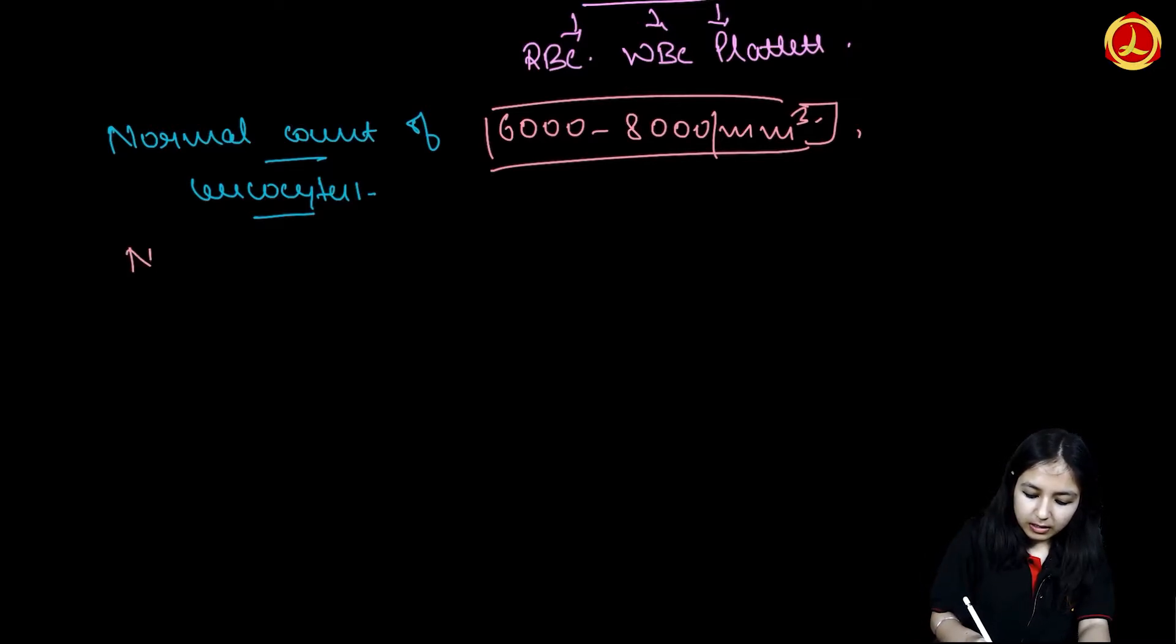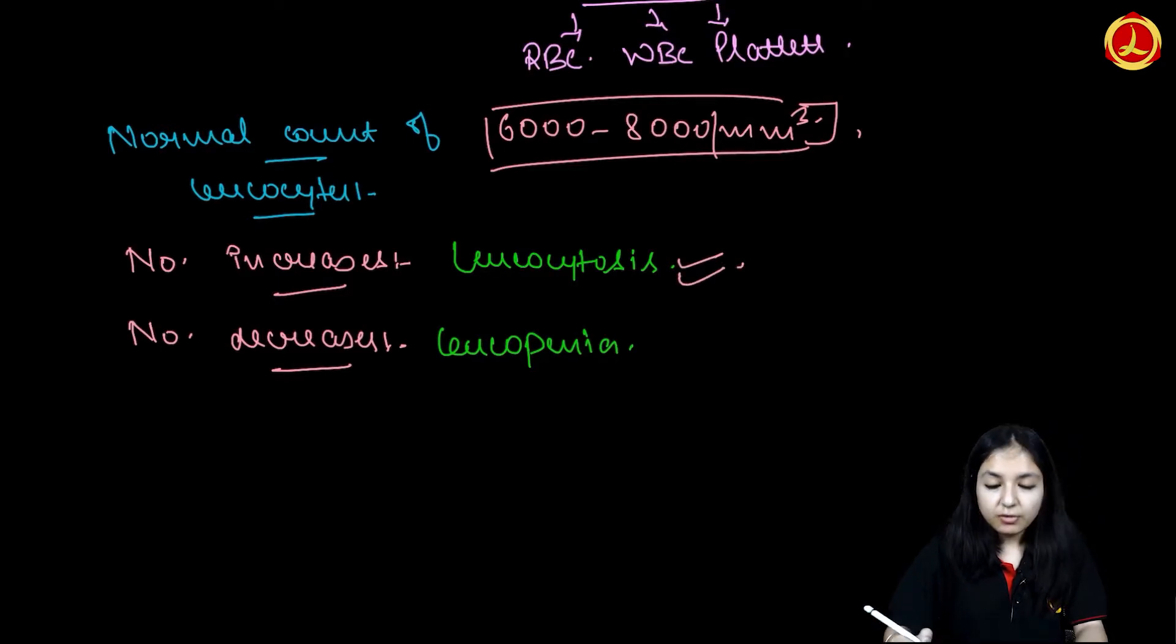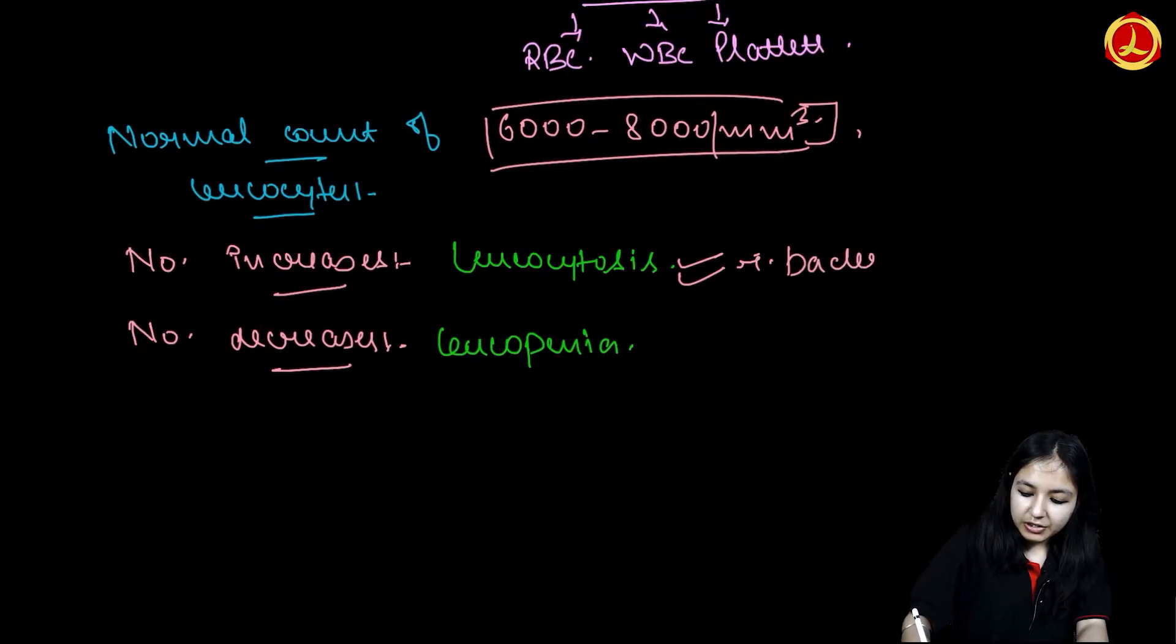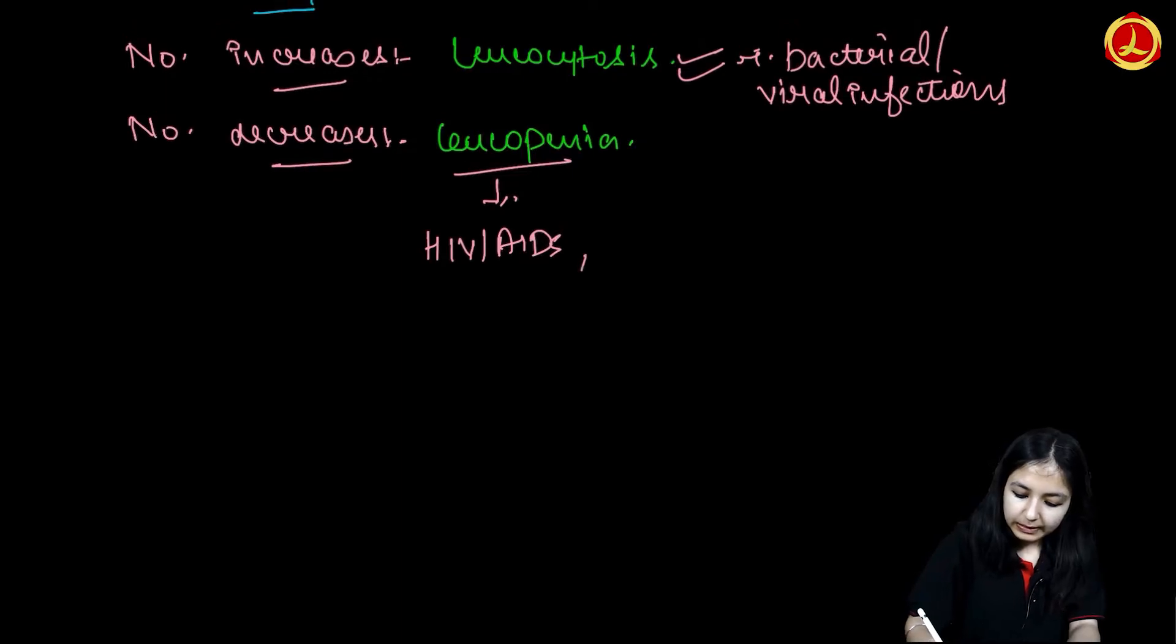If this number increases, we call it Leucocytosis. If this number decreases, we call it Leucopenia. In case of Leucocytosis, it is a normal phenomenon. It may increase in cases of bacterial or viral infections and it may naturally decrease in cases of HIV, AIDS, typhoid.